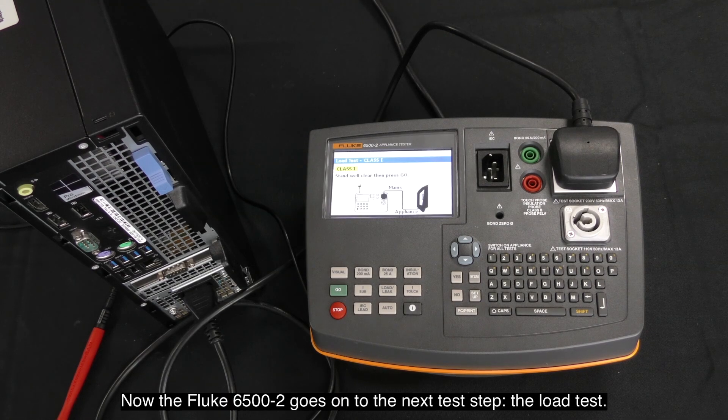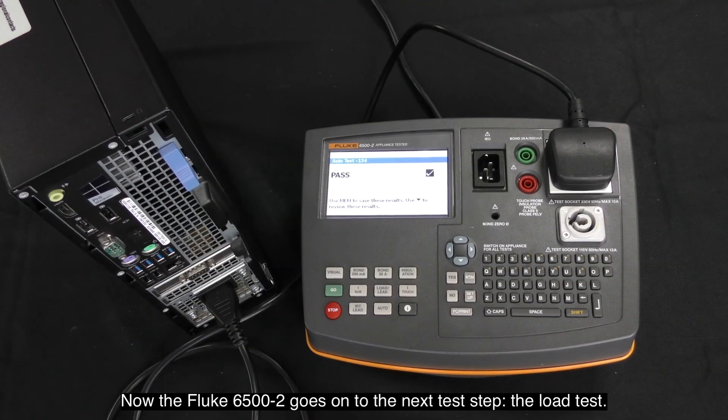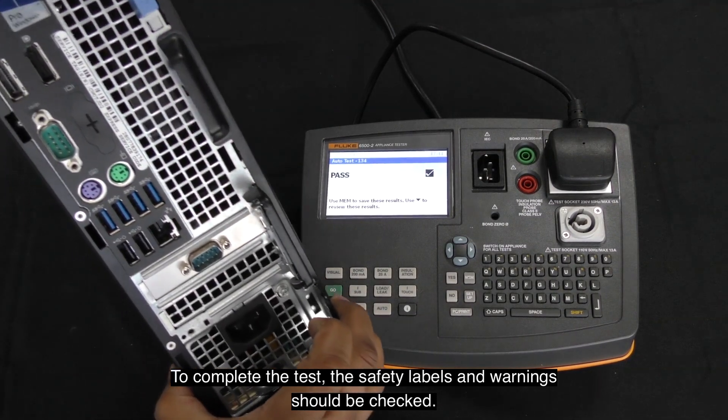The Fluke 6500 Mark II goes on to the next test step, the load test. To complete the test, the safety label and warnings should be checked.